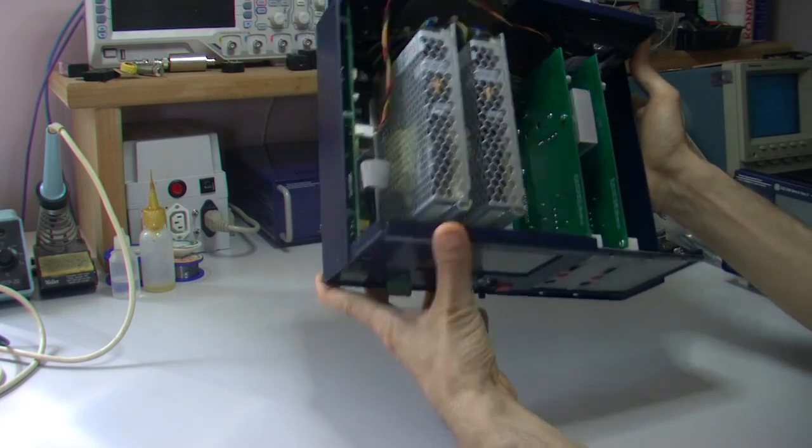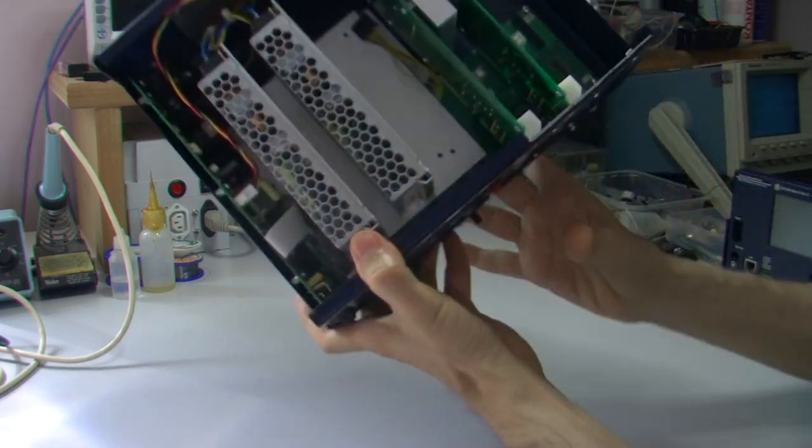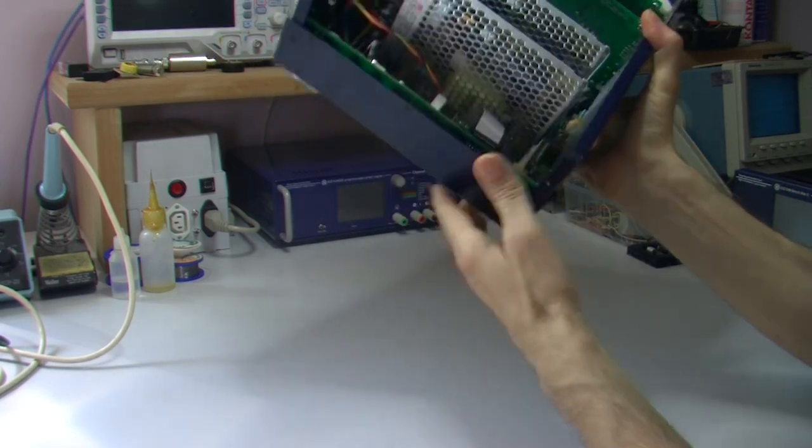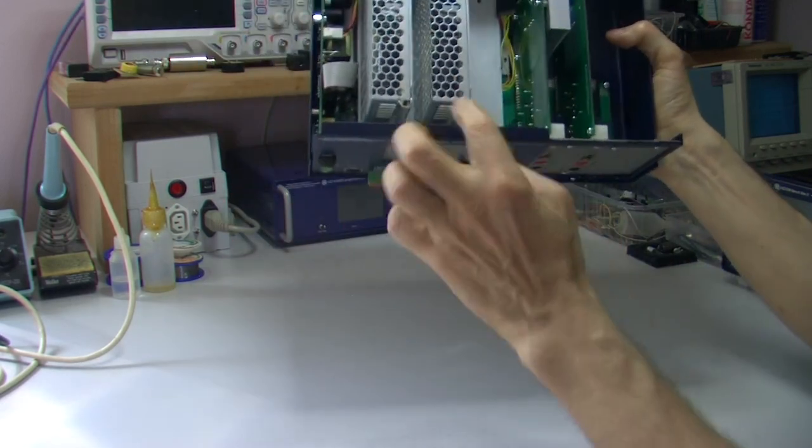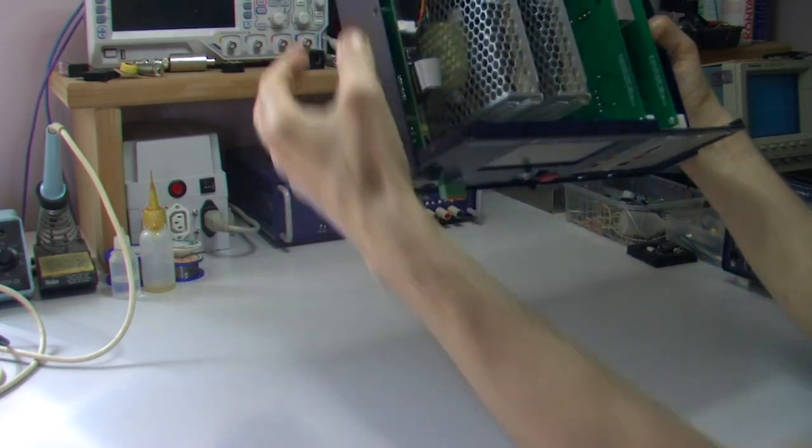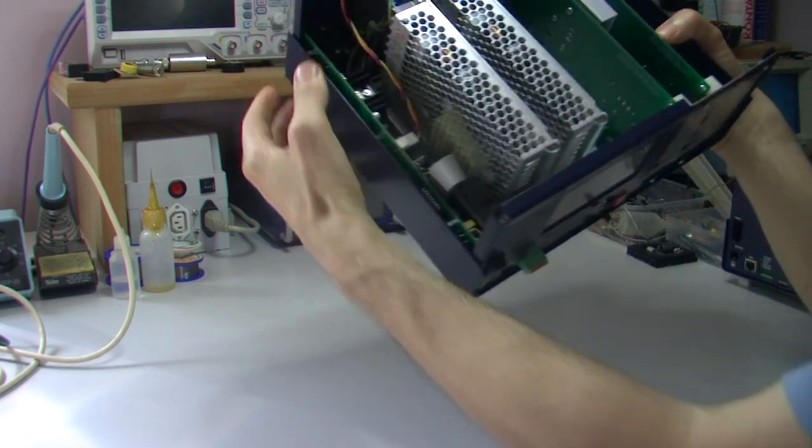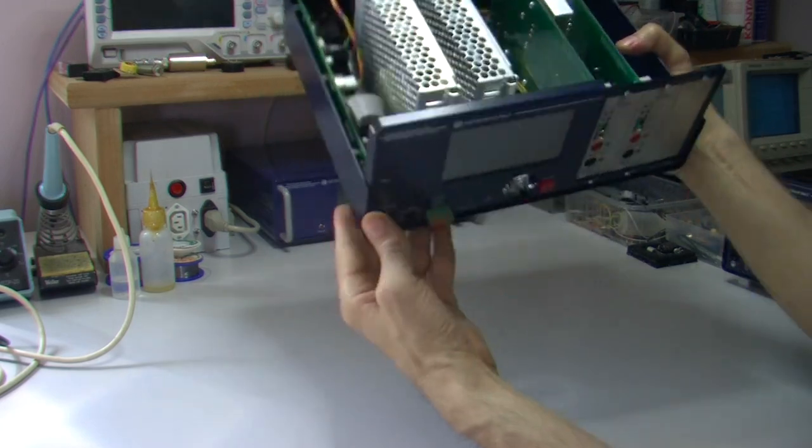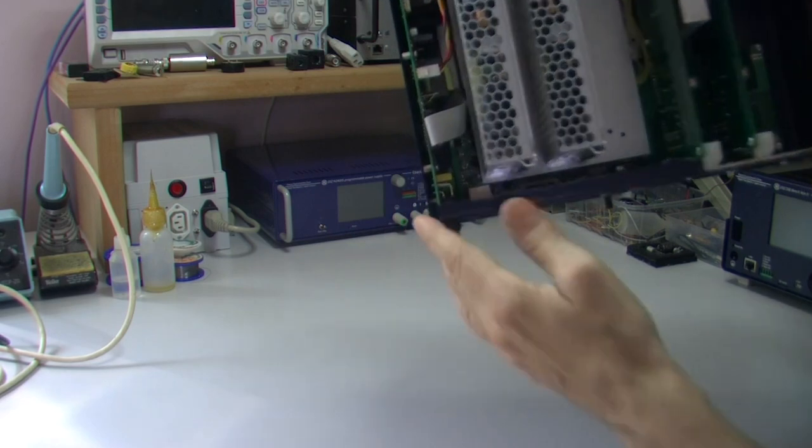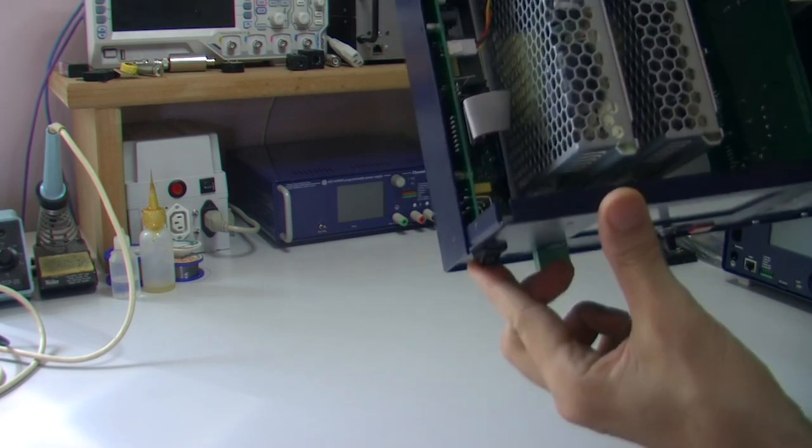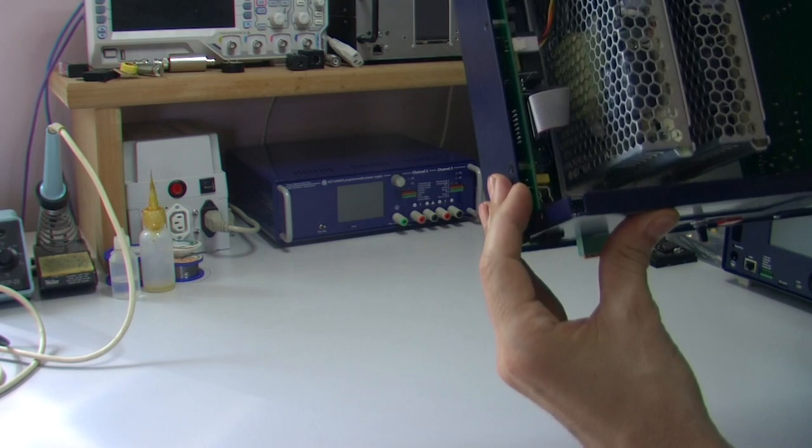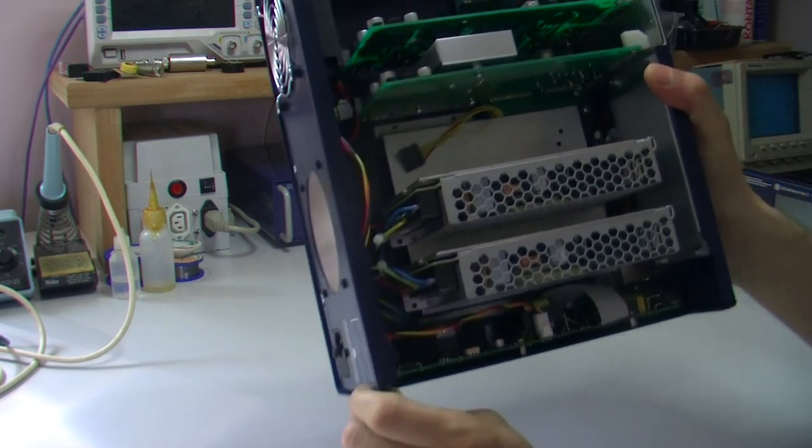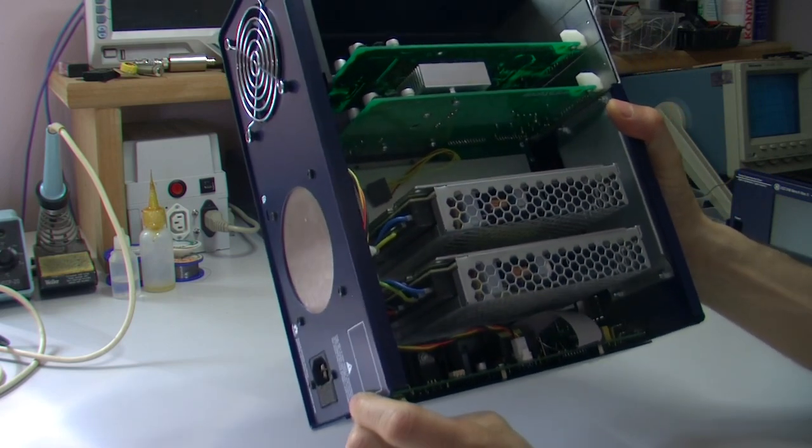Looking from inside we can see the power module for powering the MCU board which is down there. It's on the PCB which goes from front to the rear and that helps us to put the power switch here without any need for additional wiring.